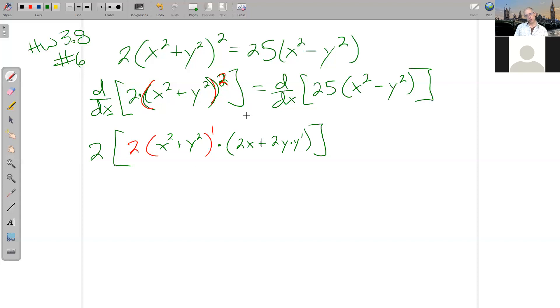So that's the derivative of the left side. On the right side, 25 is a constant so that just pops out. And then we have the derivative of this right here, which is just 2x minus 2y. And since y is a function of x, the chain rule says you better multiply by its derivative. So that's my first run through this. And then we clean it up.